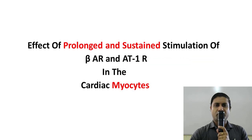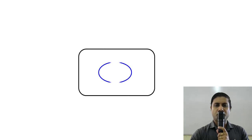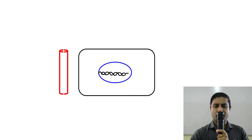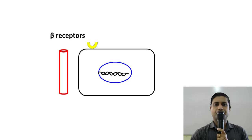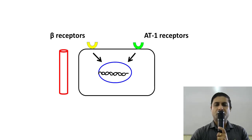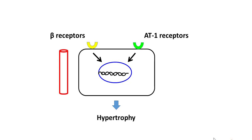Let us try to understand the effects of prolonged and sustained stimulation of beta-adrenergic receptors and AT1 receptors on the cardiac myocytes. Here is a cardiac myocyte with its nucleus, DNA, and surrounding cytoplasm. That is the capillary supplying this cardiac myocyte with its blood supply. Here we see the beta-adrenergic receptor and the AT1 receptor. Upon prolonged and sustained stimulation of these receptors, one of the first effects that occurs is hypertrophy of the cardiac myocyte.